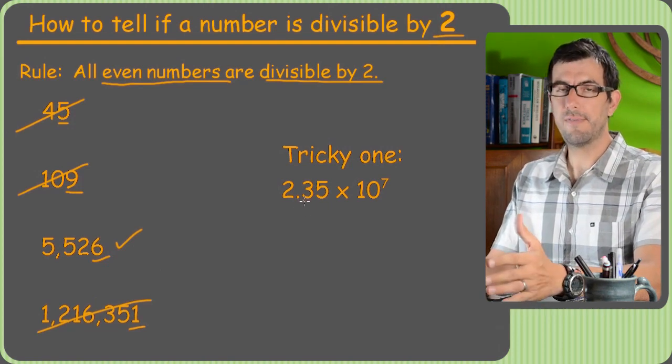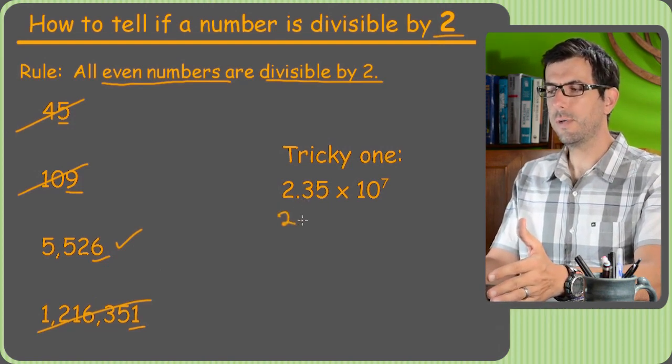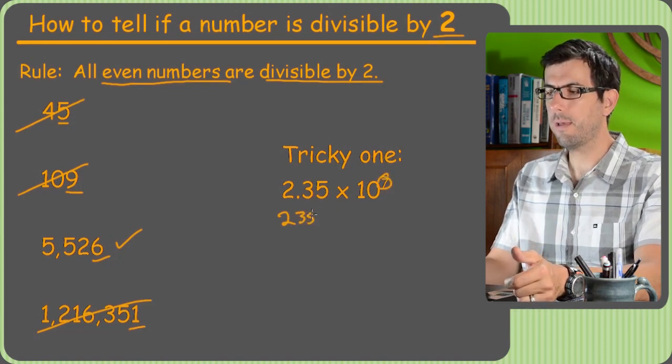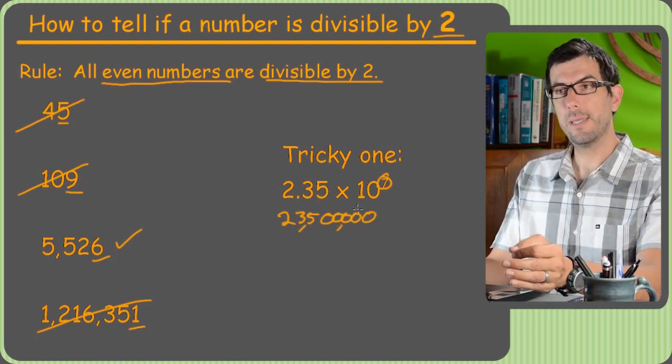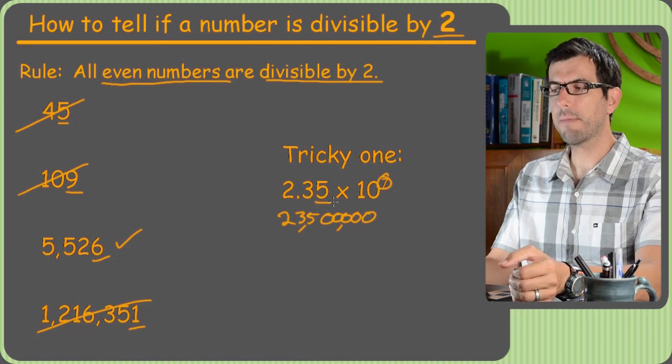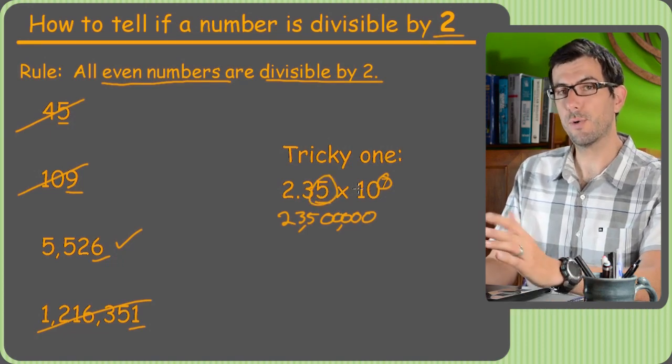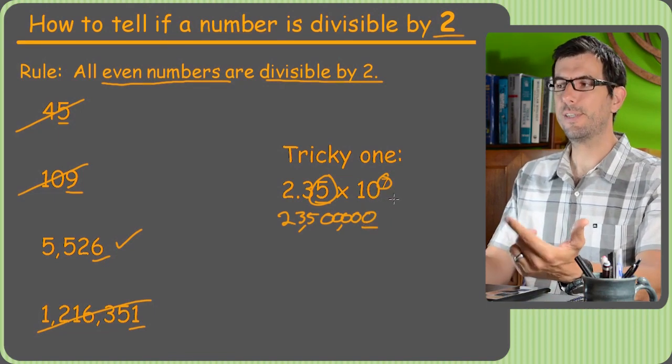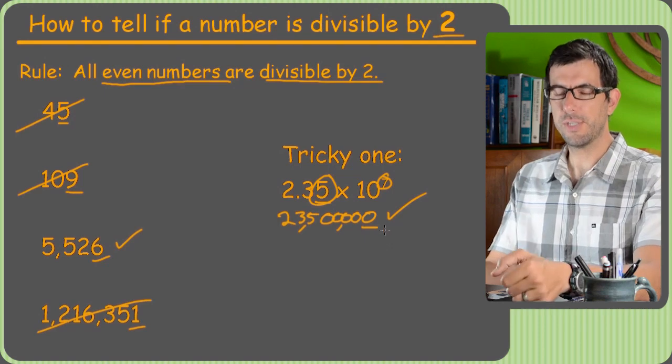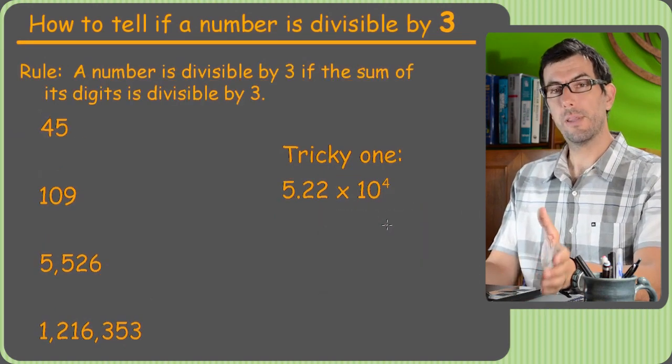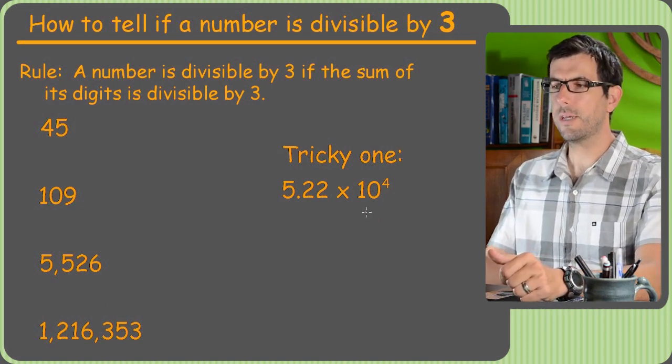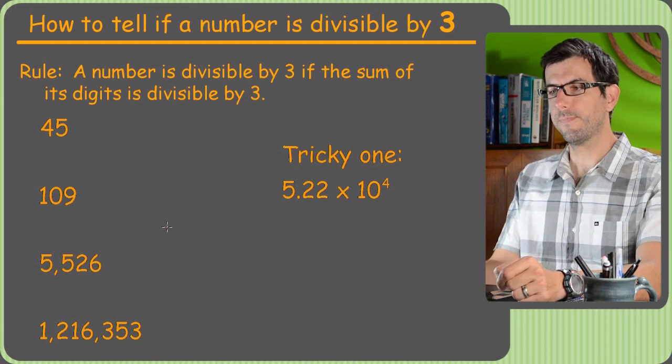This is a little tricky. If you know scientific notation already, this is 2 and then we've got to move the decimal place 7 to the right. So 2 and then 3, 5, and then 5 zeros. And wherever you drop in your commas, the point is, this thing ends in 0. So even though it looked like it might be an odd number, because there was a 5 right there that it sort of looked like it ended in, in fact, this number ends in 0. So it's even, so it's divisible by 2.